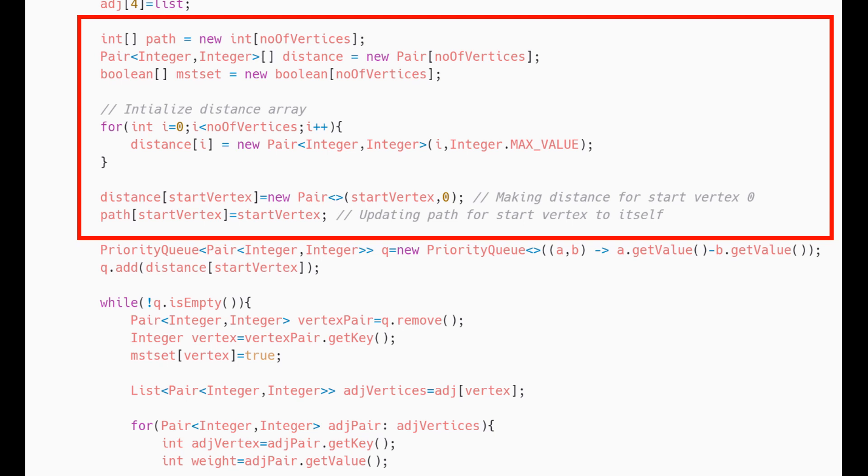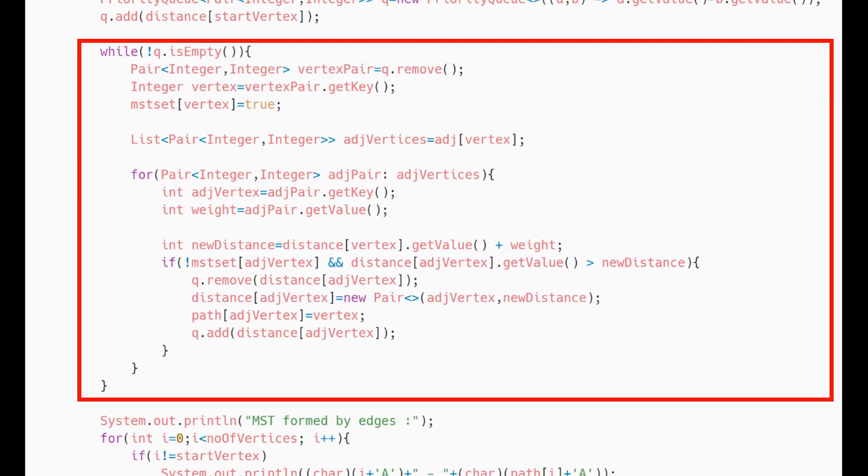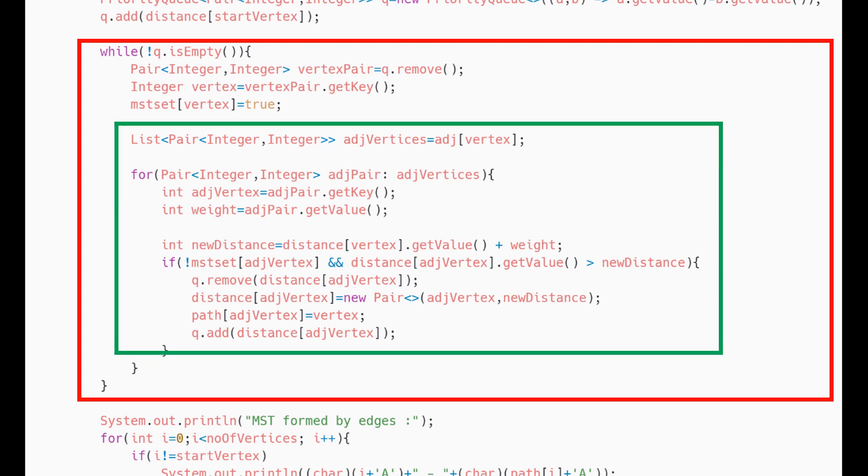We will also initialize our mstset array to store the vertex which are included in the minimum spanning tree. We will then initialize our priority queue with a custom comparator and add the start vertex pair into it. We will traverse till the queue is not empty. And here we update the queue with new vertex only if the vertex is not already in mstset and the distance is less than the old distance.